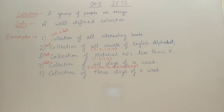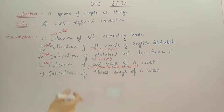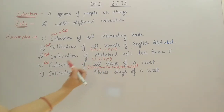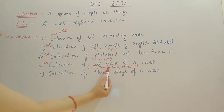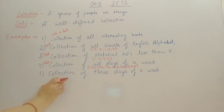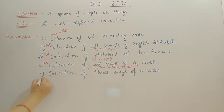The fifth example is the collection of three days of a week. In this example it says 'three days', but we don't know which three days are meant. It may be Sunday, Monday, Tuesday, or it may be Tuesday, Wednesday, Thursday. So this collection is not well-defined — which days to take is not mentioned properly. So this fifth example is not a set; it is just a collection.